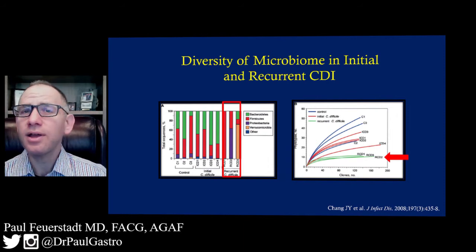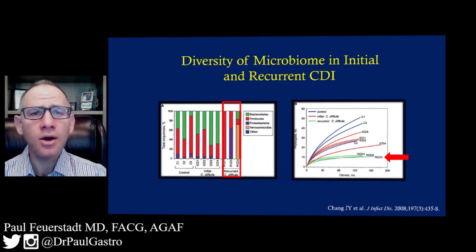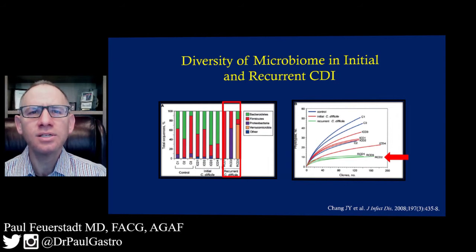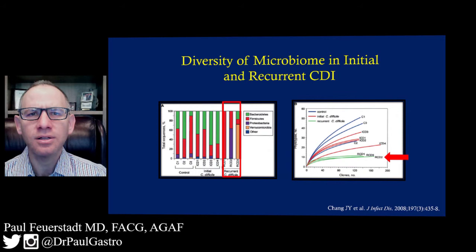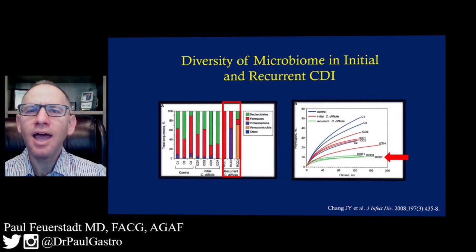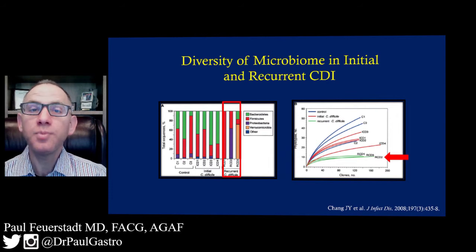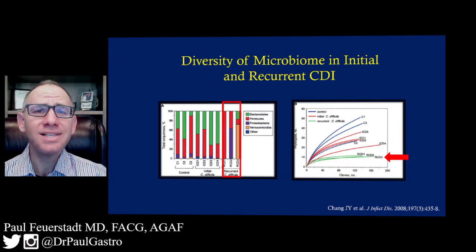When comparing initial infection with recurrent infection, there were statistically significant differences, with a depletion of colonization resistance and diversity in those with recurrent C. difficile. In addition, there was a depletion in the preponderance of Bacteroidetes and Firmicutes in those with recurrent C. difficile. It is believed that Bacteroidetes and Firmicutes play an essential role in the development of this infection.